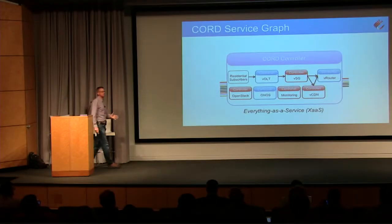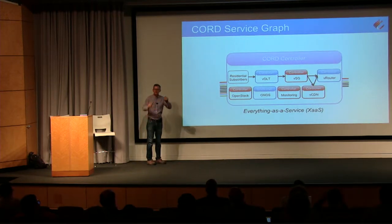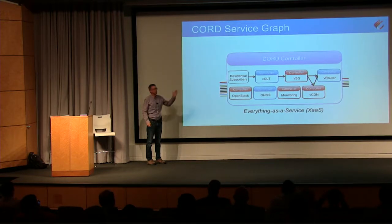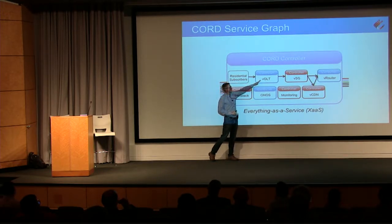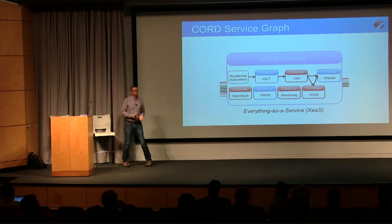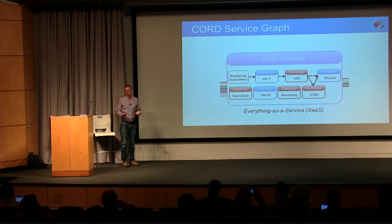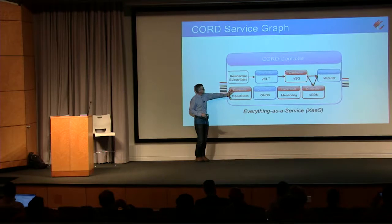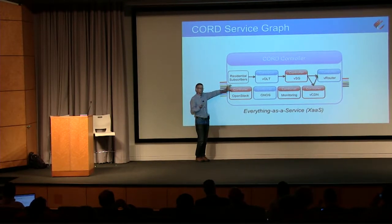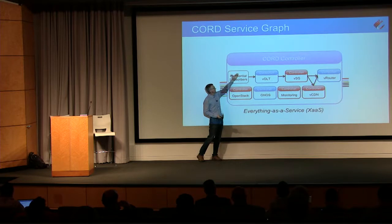Sometimes we represent the software this way because ultimately at that service level for CORD as a whole, you're building a service graph. For residential subscribers, for example, you want them to get service from a virtual OLT that becomes a tenant of a virtual subscriber gateway (VSG), which becomes a tenant of the virtual router (VRouter), with other sub-services they depend on. Some services are implemented on top of ONOS and others on top of OpenStack. Every service has a controller, you establish dependencies between them, and then you build a controller for CORD as a whole.